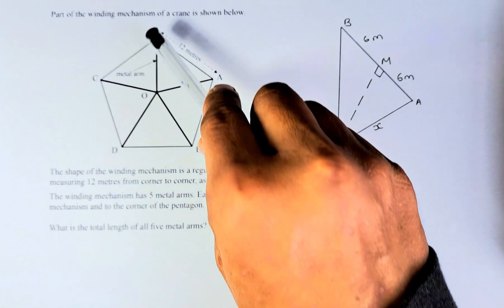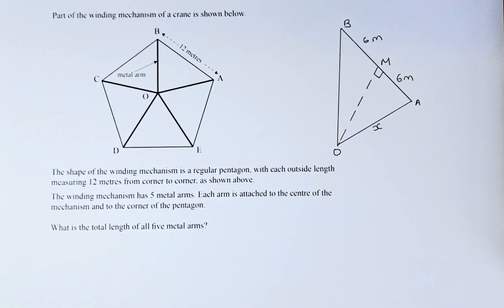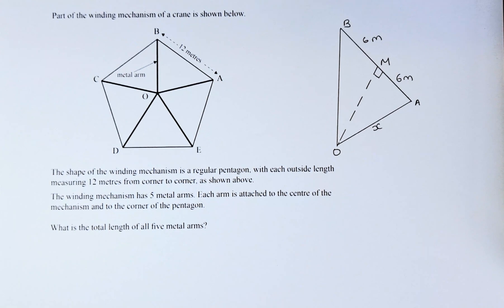The winding mechanism has 5 metal arms. So these are all the arms, 1, 2, 3, 4, 5. Each arm is attached to the center hole and to the corner of the pentagon. What is the total length of all the 5 metal arms?